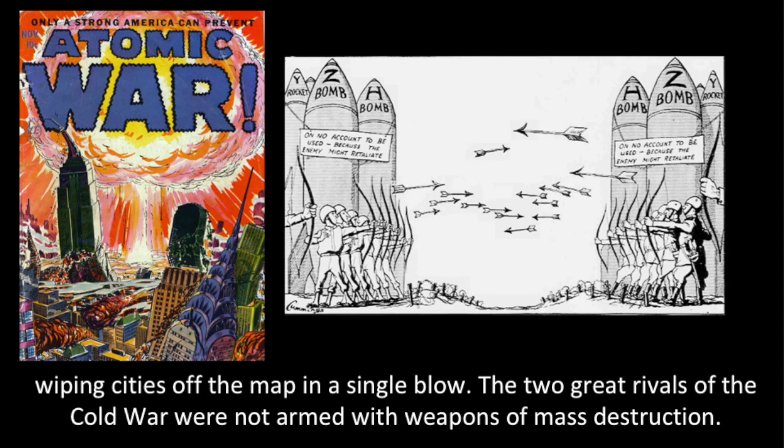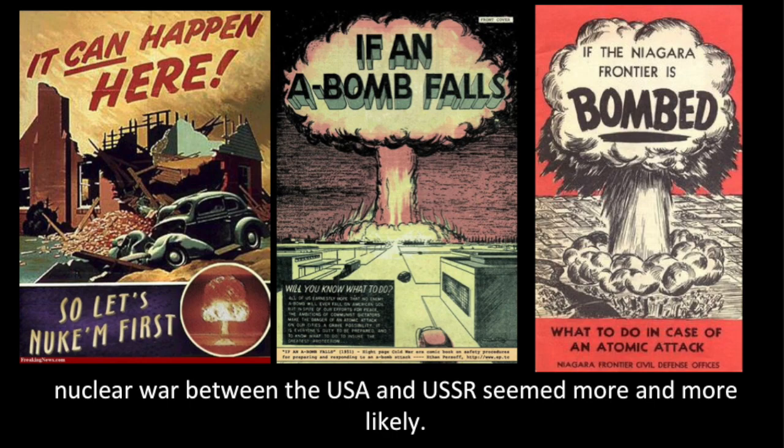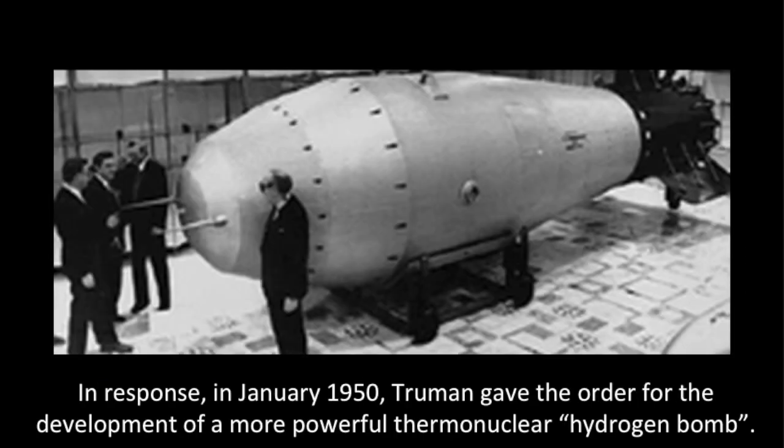The two great rivals of the Cold War were now armed with weapons of mass destruction. For many people living at the time, having just witnessed two world wars, nuclear war between the USA and USSR seemed more and more likely. In response, in January 1950, Truman gave the order for the development of a more powerful thermonuclear hydrogen bomb.